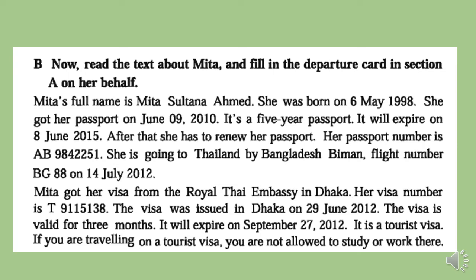Mita got her visa from the Royal Thai Embassy in Dhaka. Her visa number is T9115138. The visa was issued in Dhaka on 29th June 2012. The visa is valid for three months and will expire on September 27th, 2012. It is a tourist visa. If you are traveling on a tourist visa, you are not allowed to study or work there.